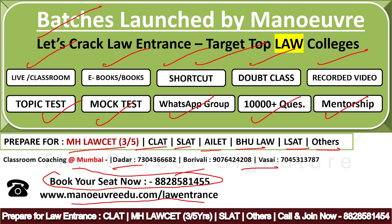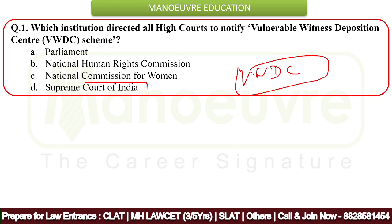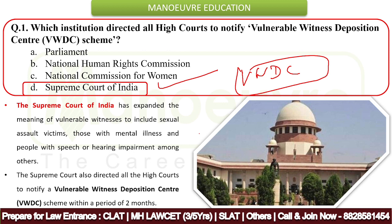First question: which institution directed all high courts to notify the Vulnerable Witness Deposition Center, which stands for VWDC? The correct answer is the Supreme Court of India — option D. The Supreme Court of India has expanded the meaning of vulnerable witness to include sexual assault victims, those with mental illness, and people with speech or hearing impairment, among others.